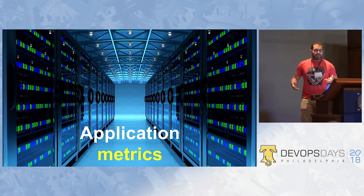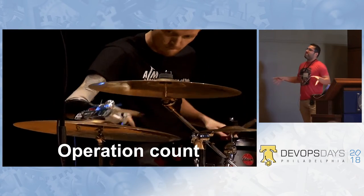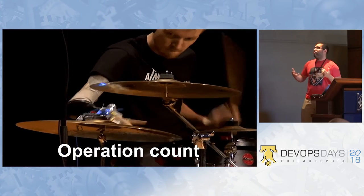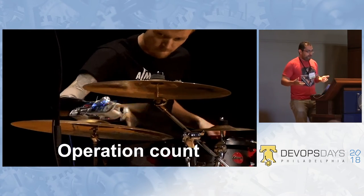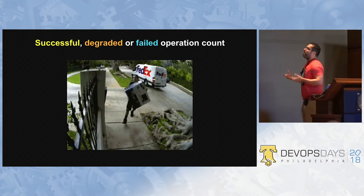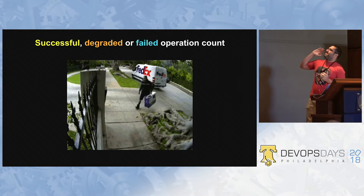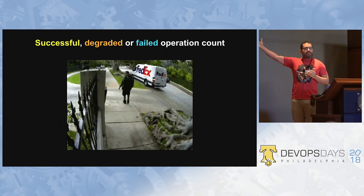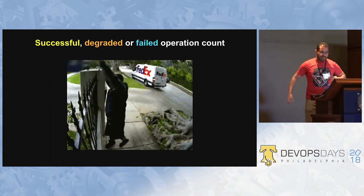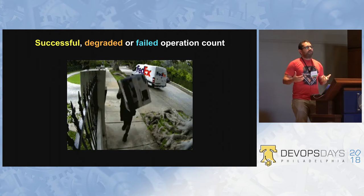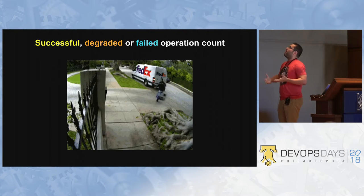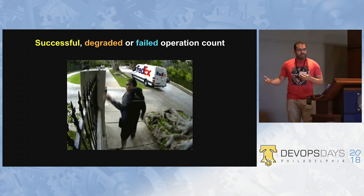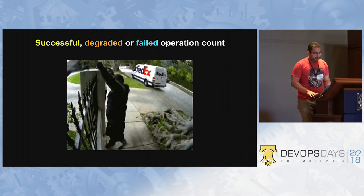Once you have those infrastructure metrics in place, you want application metrics. The first one is operation count — request/response count. If you're running some kind of backend service taking requests, like a Hadoop cluster or something like that, you also want to collect the amount of operations you're running. You want to know if the operations were successful, degraded, or failed. Maybe your system is getting a lot of operations but most of them are failing — if you don't have this metric, you're not going to understand what's going on.